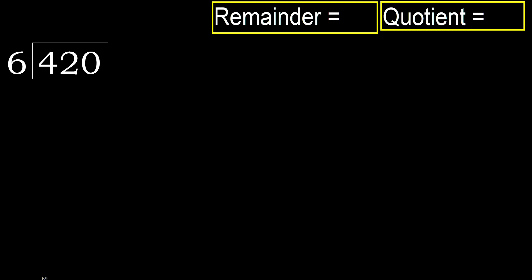420 divided by 6. 4 is less than 6, therefore next. 42 is not less, therefore with 42. Multiply by which number is nearest to 42.